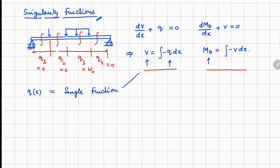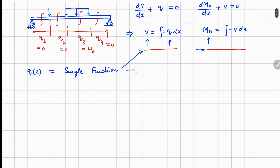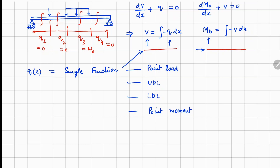To tackle this problem we have the mathematical tool known as the singularity function, so that we can express q for this beam as a single function. Once we have that single function we can integrate to get both shear force and bending moment. In this single function we need to represent point loads, UDL, linearly distributed loads, and for complex problems, point moments — these are the basic building blocks.